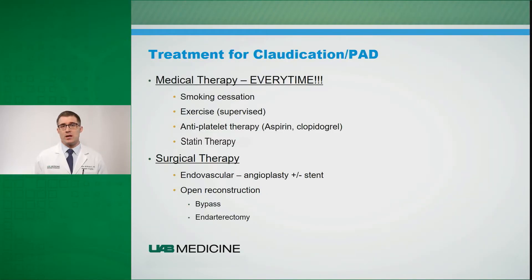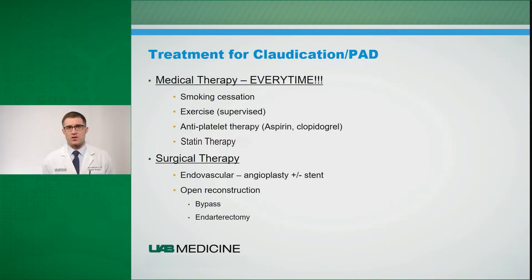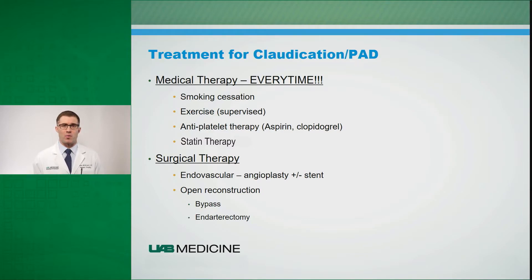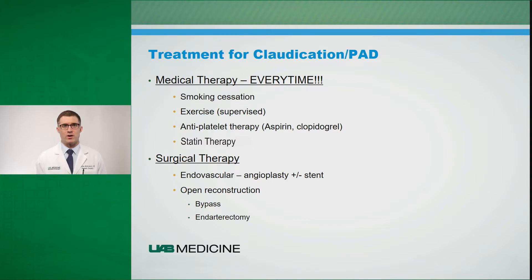When treating patients with claudication and peripheral arterial disease, the most important first step is appropriate medical therapy and lifestyle changes. Smoking cessation is really the most important thing you can do if you smoke and have peripheral arterial disease to halt the progression of the disease.